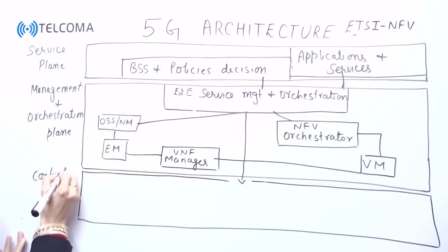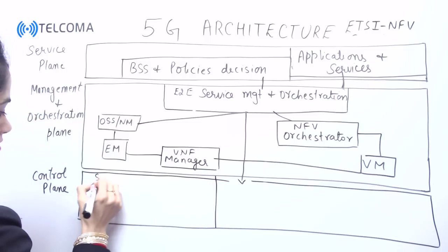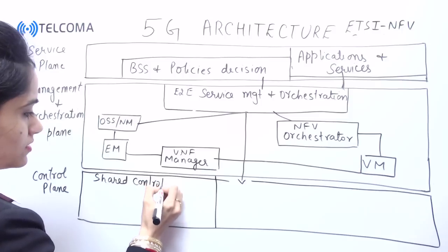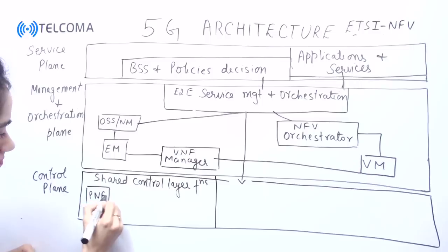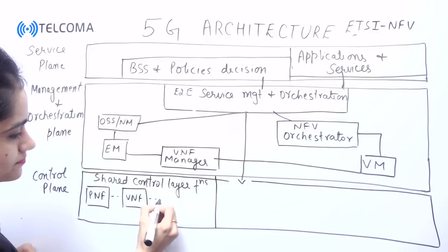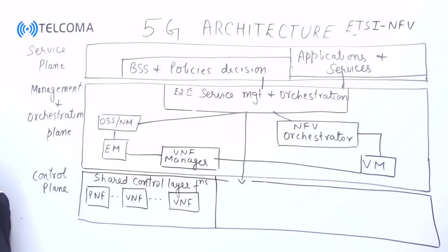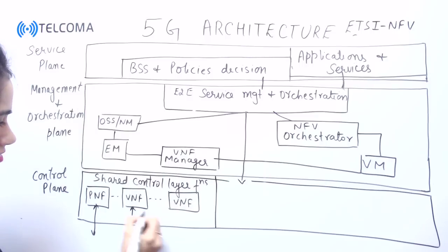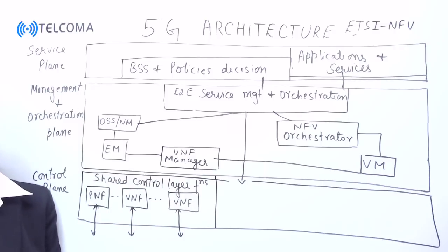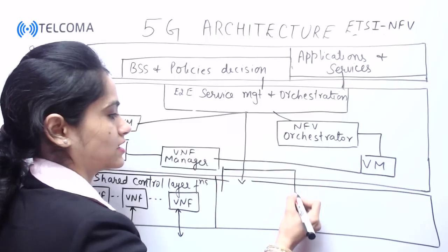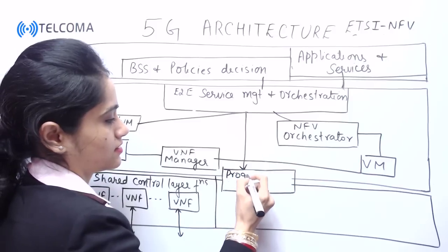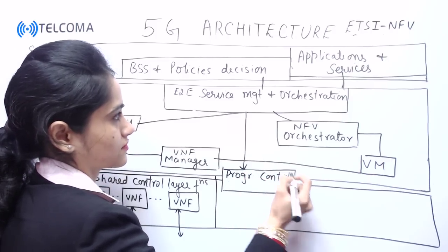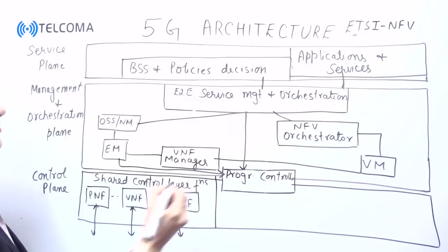The next plane is the control plane. In the control plane we are having shared control layer functions, including some physical network functions and virtual network functions. We also have a programmable controller here. The management and orchestration plane is connected to this programmable controller.